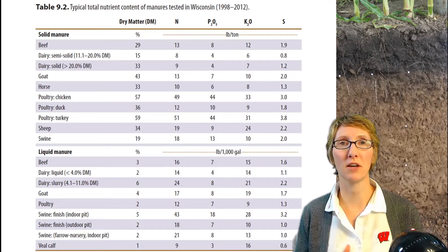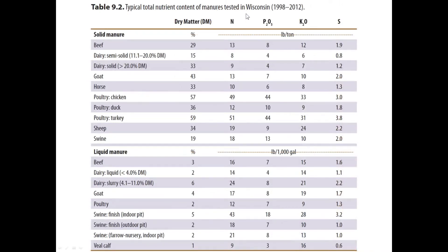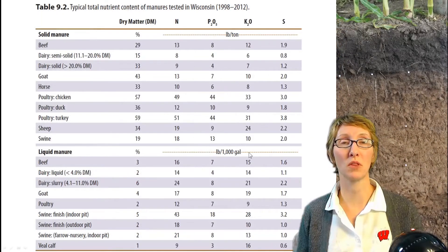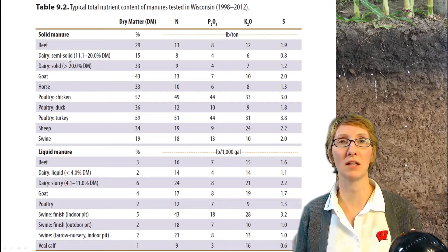This table highlights the typical total nutrient content of manures in Wisconsin. It's based on median values for all manures tested from 1998 to 2012 — samples sent to the UW lab as well as some private labs in Wisconsin that shared their data. We can see total N, total P2O5, total K2O, and total S, along with dry matter content. These are median values, with solid manures at the top and liquid manures at the bottom, with differences in units between pounds per thousand gallons or pounds per ton.